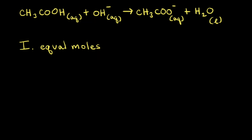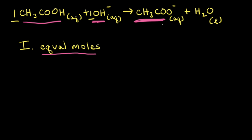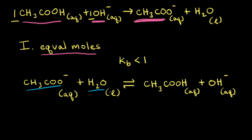Now that we have our net ionic equation, we're going to think about three different situations. In the first situation, we have equal moles of our weak acid and our strong base. Looking at our balanced net ionic equation, the mole ratio of the weak acid to the strong base is one to one. Therefore, if we have equal moles of our weak acid and our strong base, they are going to completely neutralize each other and form the acetate anion. To find the pH of the resulting solution, we don't need to consider acetic acid or hydroxide ions because these have been completely used up — we need to think about the acetate anion in aqueous solution. Acetate anions react with water to form acetic acid and hydroxide ions. This reaction comes to an equilibrium, and since Kb is less than one, at equilibrium there will be a large amount of reactants and only a small amount of products.